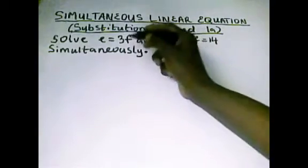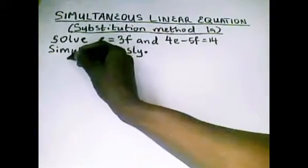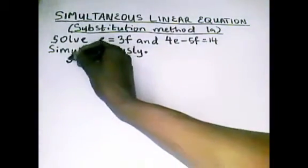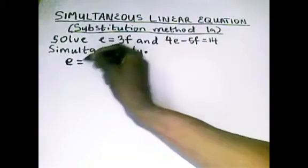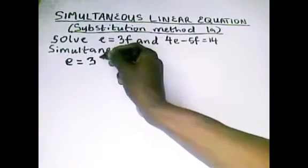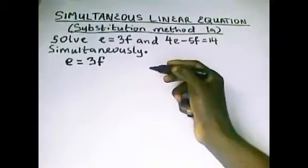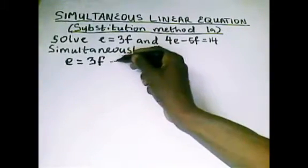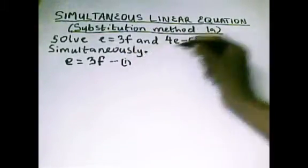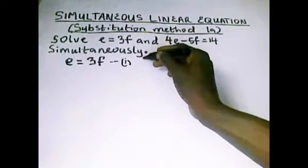How do we approach this question on the board? The first thing we do is come to this first part here which is e equals 3f. Let's call this equation 1. Then for the next one we have 4e minus 5f equals 14.